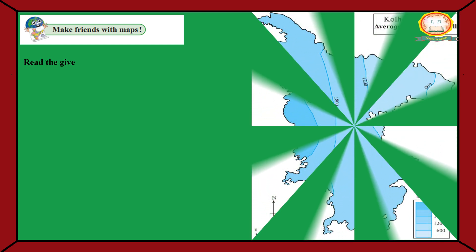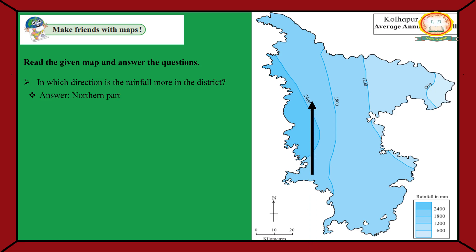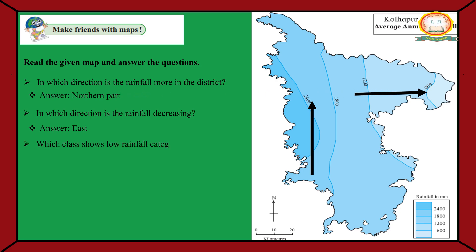Make friends with maps. Read the given map and answer the questions. In which direction is the rainfall more in the district? Answer: Northern part. In which direction is the rainfall decreasing? Answer: East. Which class shows low rainfall category in the district? Answer: 0–600 mm.